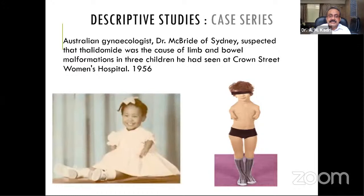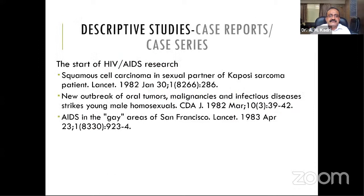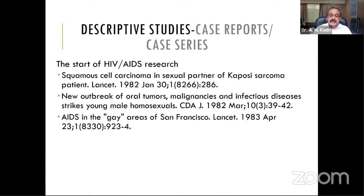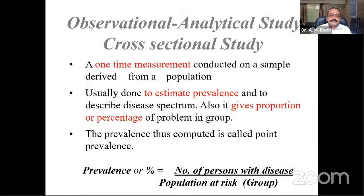Classic examples: thalidomide — a series of case reports identified that women who took this drug during pregnancy delivered babies with limb defects, and the drug was suspected as the cause. Similarly, HIV was first observed in 1981 when unusual cases of Kaposi's sarcoma appeared among homosexual men with atypical symptoms. Through case series and case reports, a new disease was identified and the cause was suspected. Cross-sectional studies are next — like a snapshot.